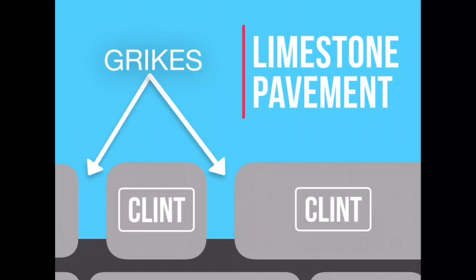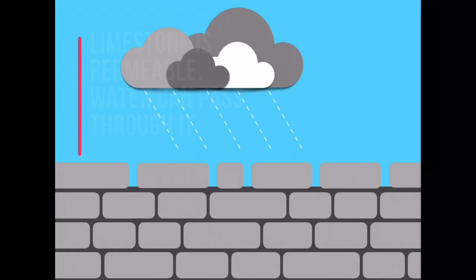A weathered limestone pavement is created. The vertical joints are widened to form grikes, between slabs of limestone known as clints.